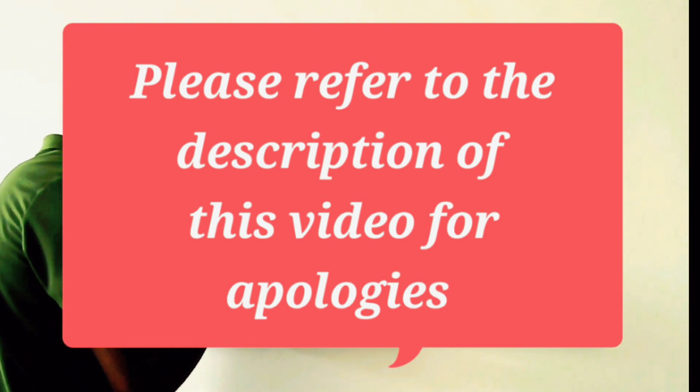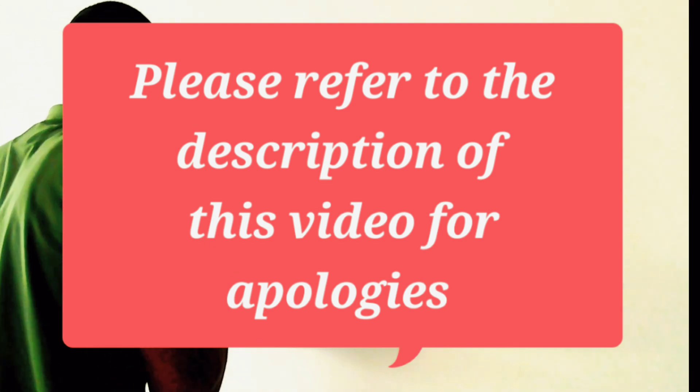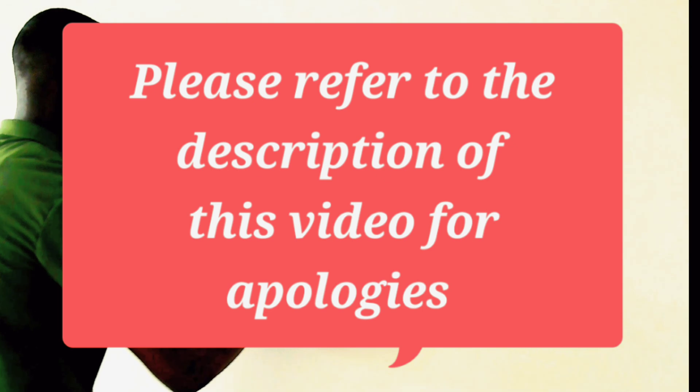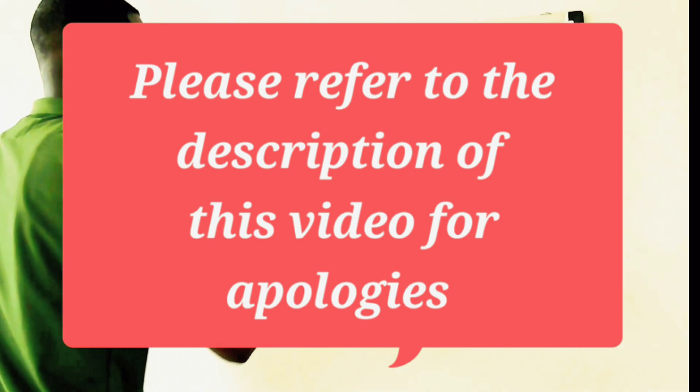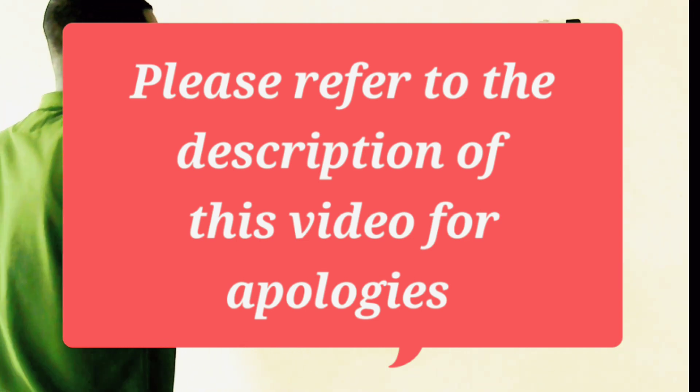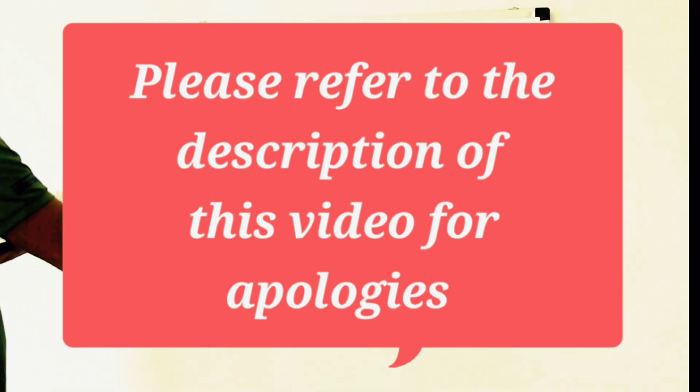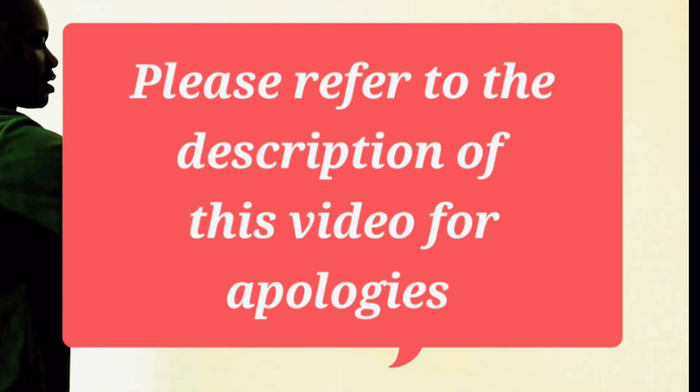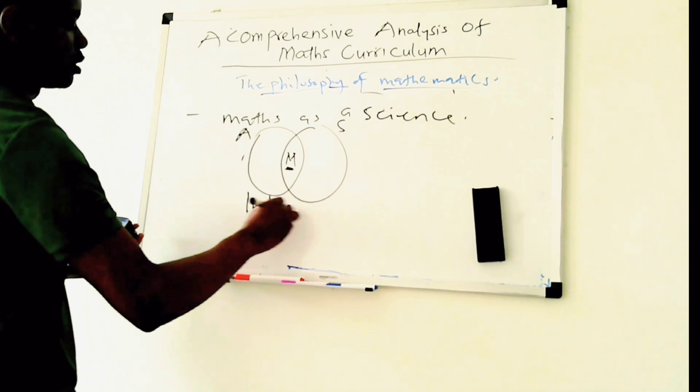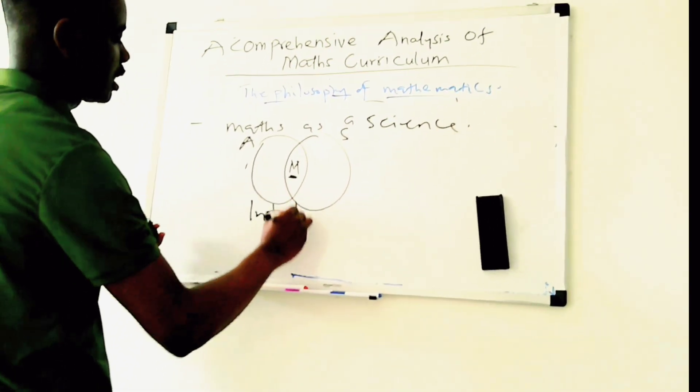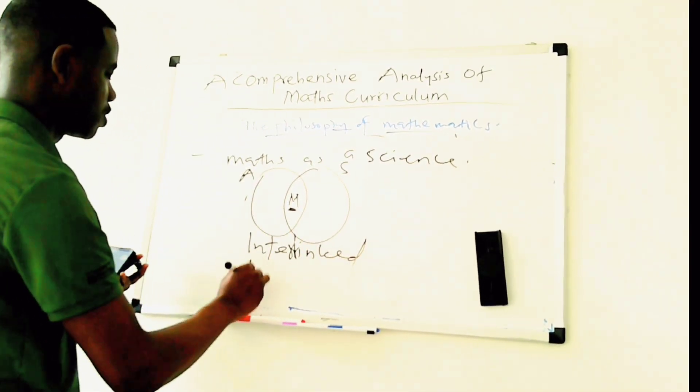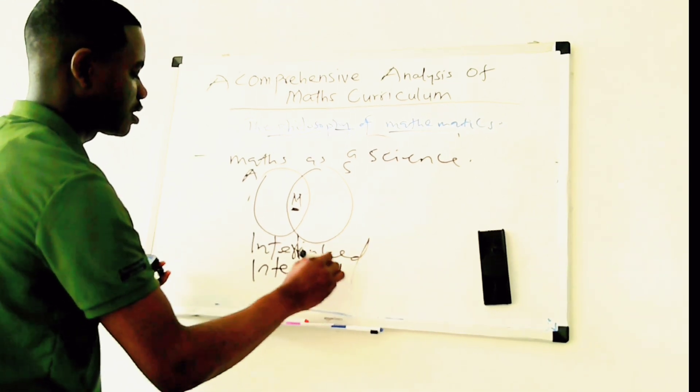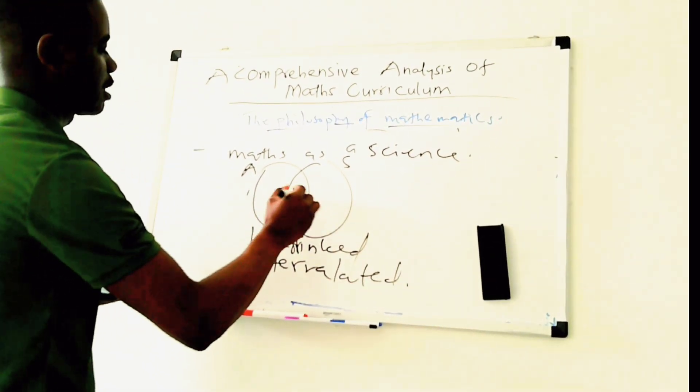Philosophically, math is the intersection of both arts and science. So it's just the intersection and this is where math is found. So this is what mathematics is, the intersection of both arts and science. So kind of they are interlinked or interrelated. So they intercept.